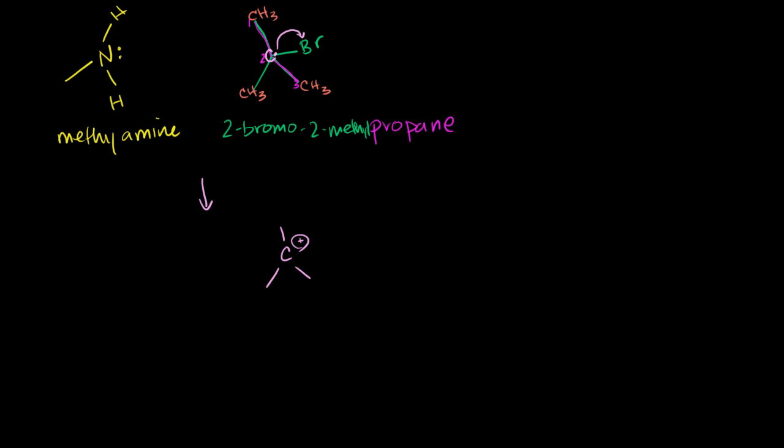This electron leaves, so it now has a positive charge right over there. That's why it's a carbocation now. And now the bromine has taken an electron. The bromine, it already had one, two, three, four, five, six, seven valence electrons.